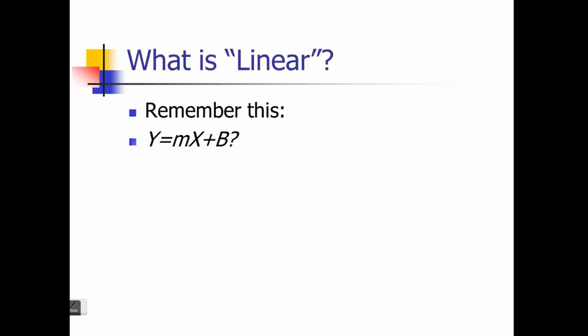In correlation, we cannot measure what happens to y if x goes up by 5% — that cannot be measured using correlation. But we can measure this in linear regression. Given a value of x, you can predict the value of y, which is another variable related to x. You cannot do that using correlation, and that is another weakness of correlation. That is why linear regression can do a lot of things that correlation cannot.